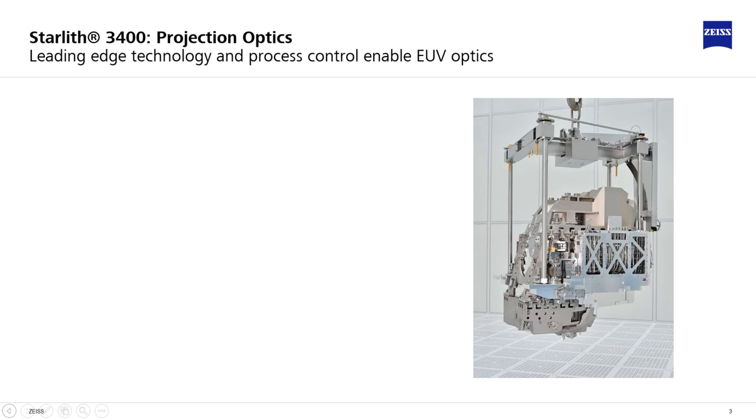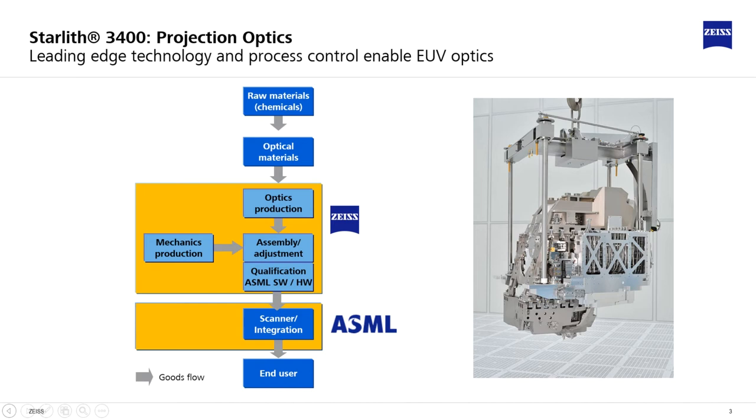In the previous two videos we were focusing on EUV and optical systems as a whole, the past systems and the present system. In this video we will have a closer look at the manufacturing technologies that make these systems possible. The stable performance of the optical system can only be achieved by applying leading-edge technology and a controlled production of its components.